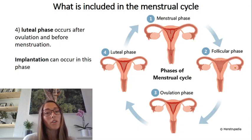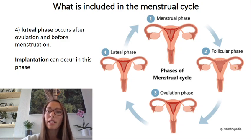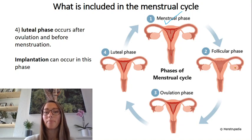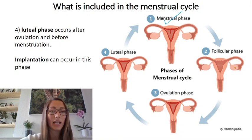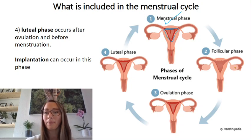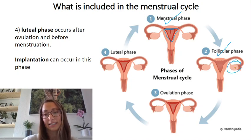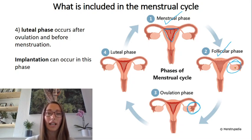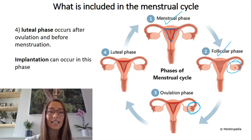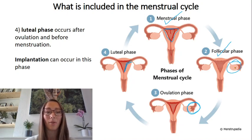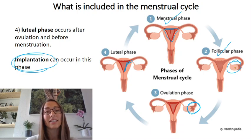Within the menstrual cycle, we've got four key stages. The menstrual cycle is about 28 days on average. The first week is the menstruation phase, where a female would have their period and the endometrium is shed. The second week is the follicular phase, where the follicles start to mature. Then we have the ovulation phase, where the dominant follicle will ovulate and the secondary oocyte will be released. And the luteal phase is where you've potentially got a good environment for implantation — if fertilisation has occurred in the fallopian tubes, the blastocyst can implant into the endometrium.